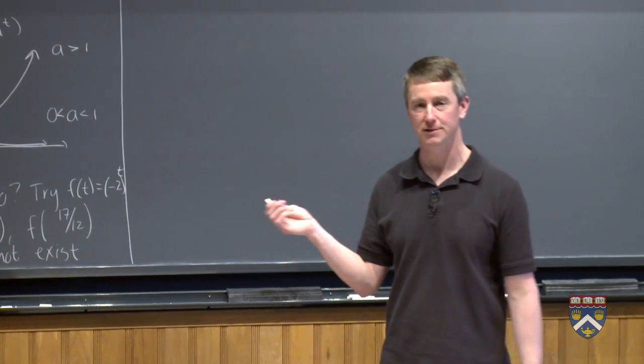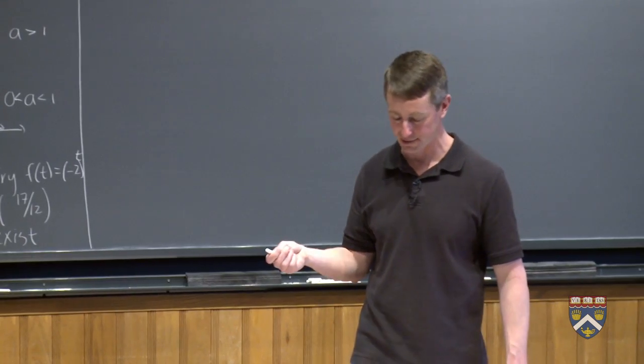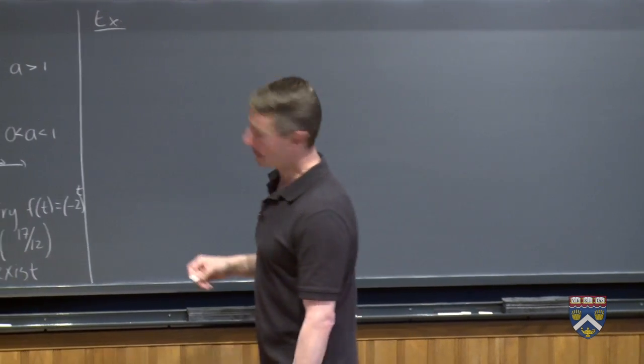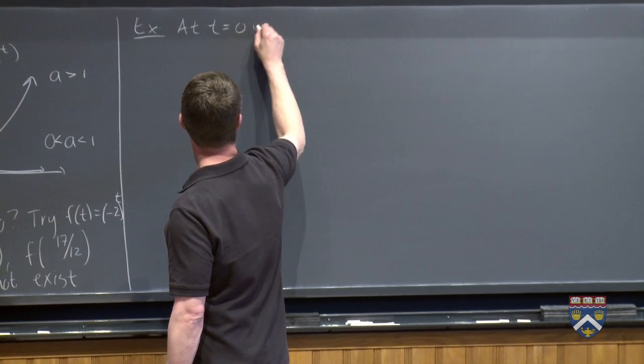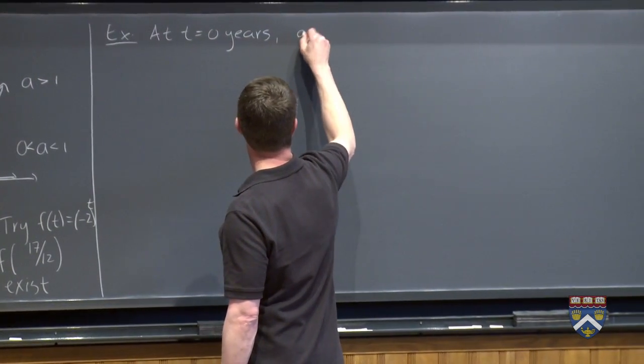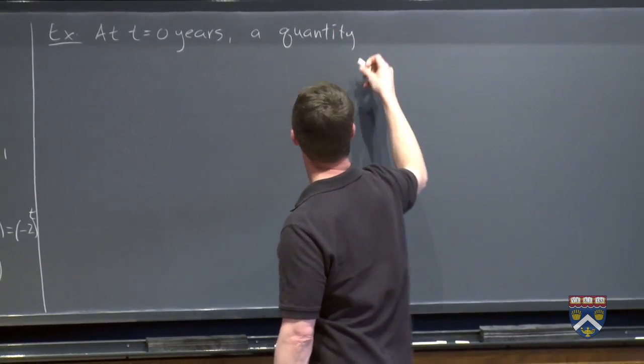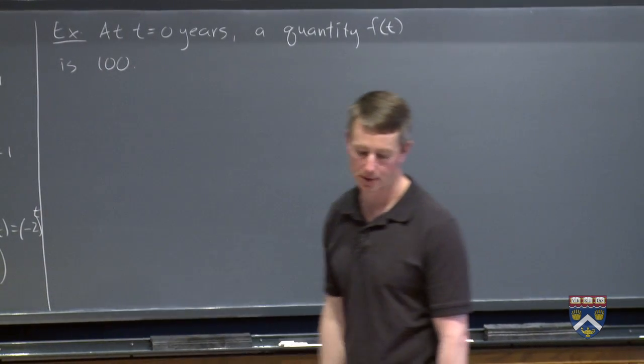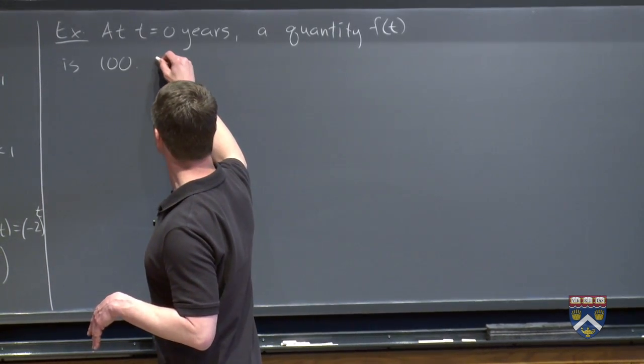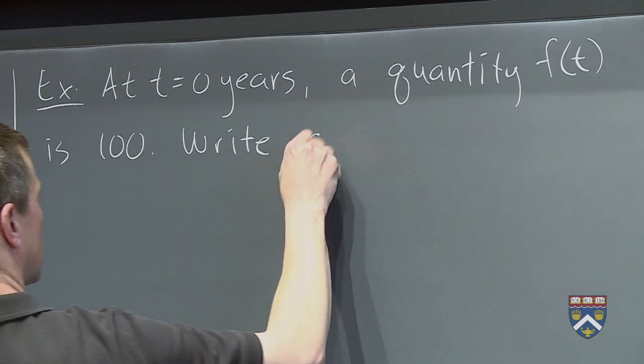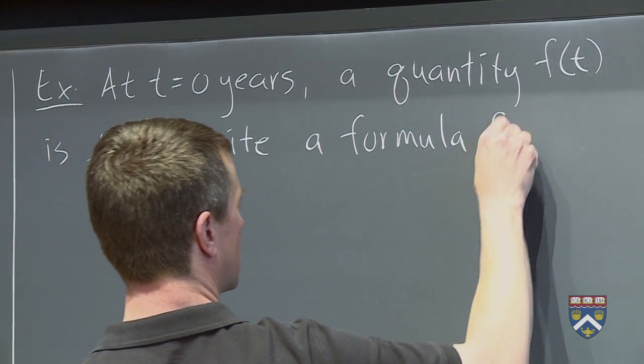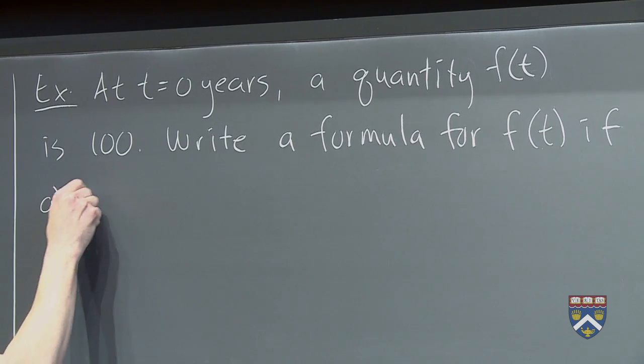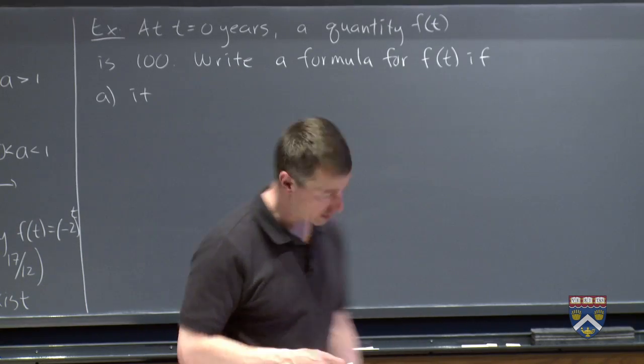So now we've seen a graphical way of looking at exponential functions. We've looked at some formulas. Now we would like to go back to our word problems to try to look at the function that way. So let's suppose that at time t equals 0 years, a quantity f(t) is 100. So that's the value at time 0. We'd like to write a formula for f(t) under various situations. So write a formula for f(t) if it grows 20% per year.